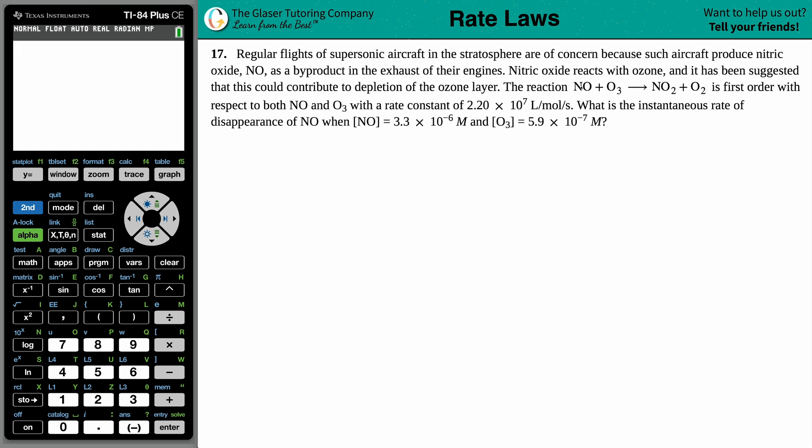The reaction NO plus O3 yields NO2 plus O2 is first order with respect to both NO and O3, with a rate constant of 2.20 times 10 to the seventh liters per mole per second. What is the instantaneous rate of disappearance of NO when the concentration of NO is 3.3 times 10 to the negative sixth molarity and the concentration of O3 is 5.9 times 10 to the negative seventh molarity?